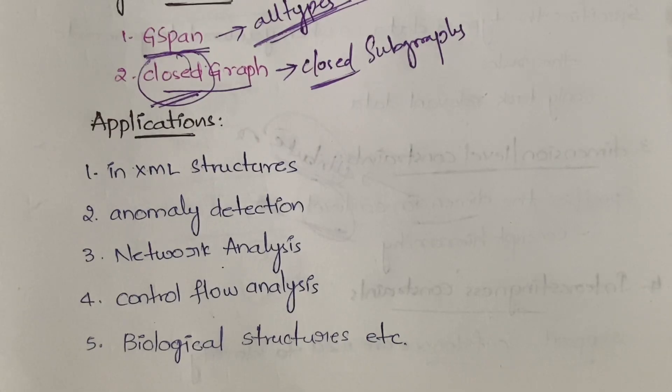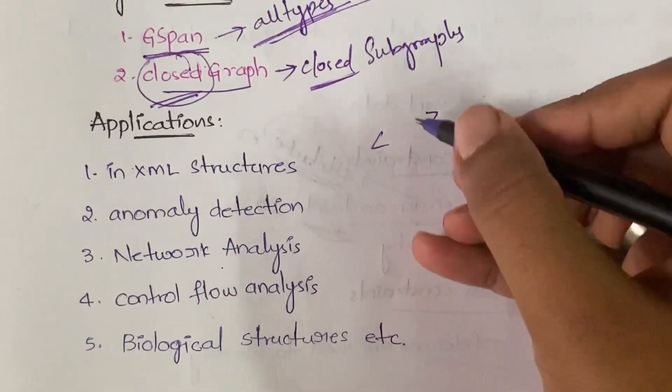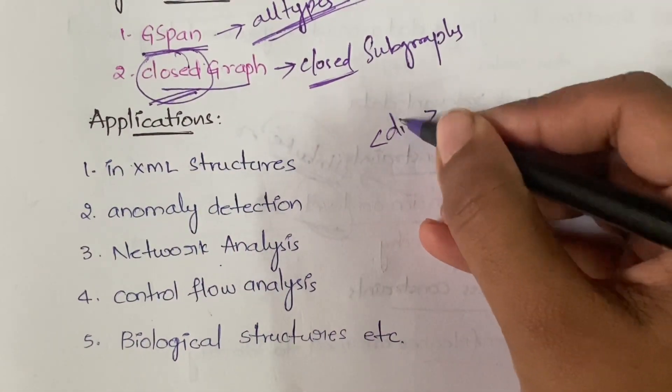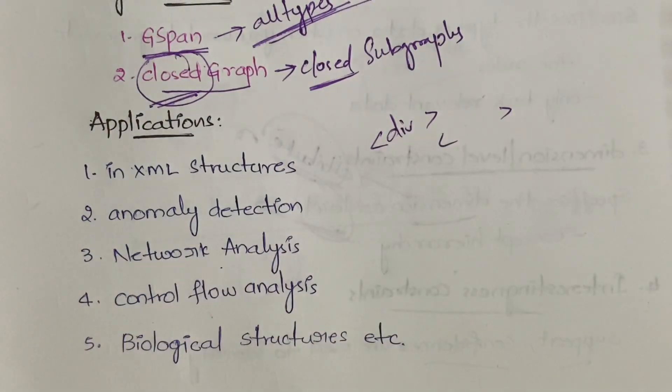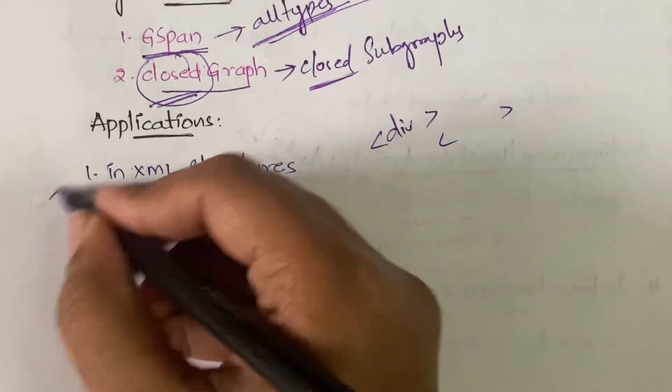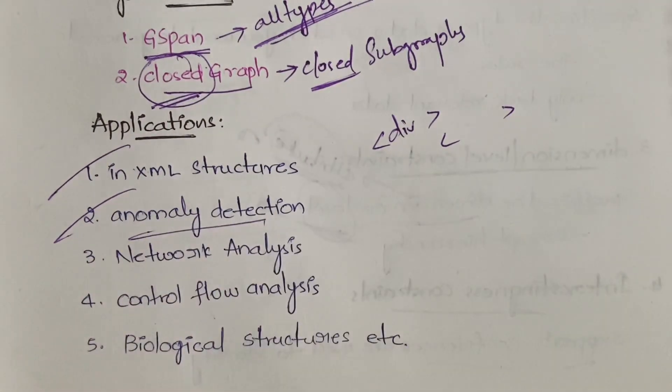You can use it in XML structures while you're defining the XML structures. In XML we will have different hierarchies - we will have the main root and then we will have the sub-elements. Those hierarchies can be expressed with graphs. Next, in case of anomaly detection also you can use this.